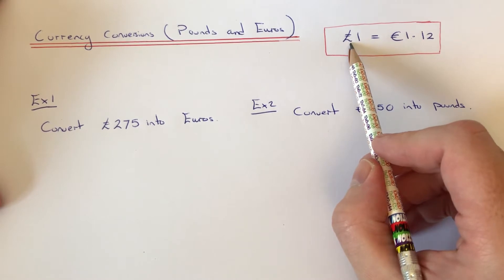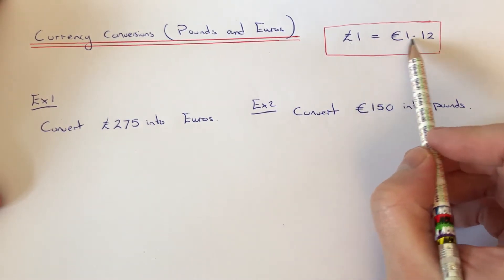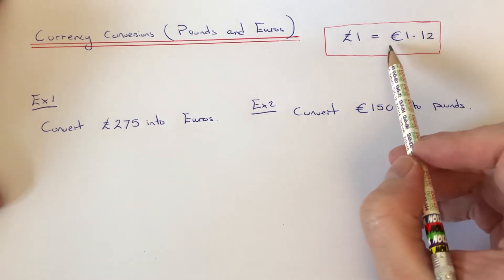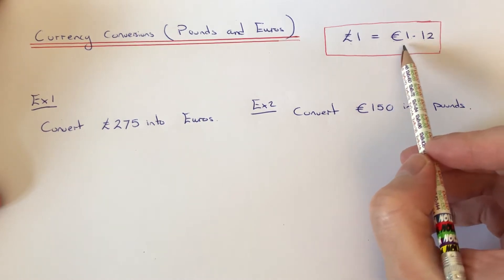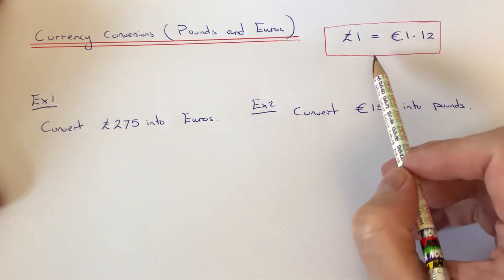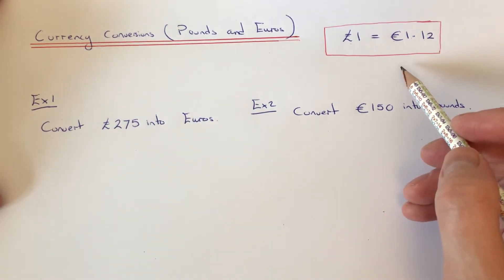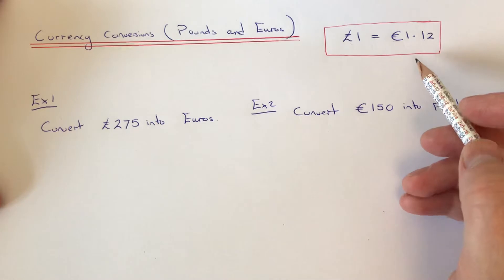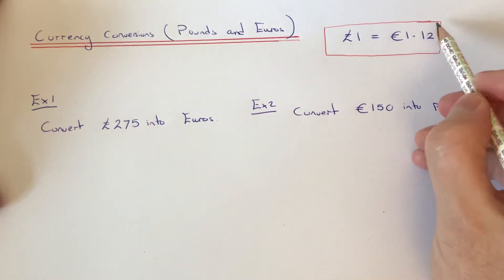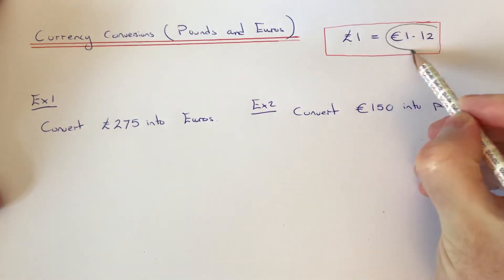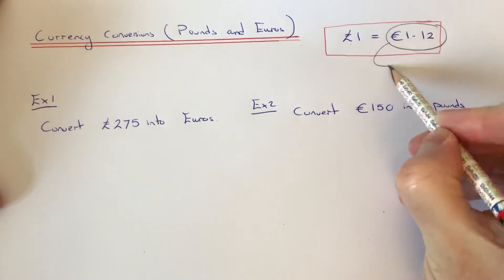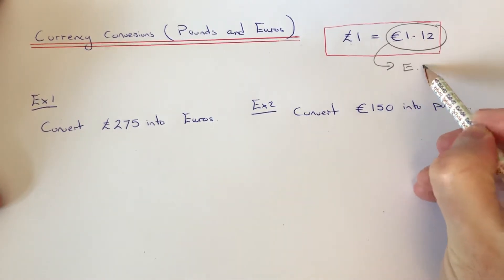The exchange rate today is £1 = €1.12. This exchange rate is usually stated on your exam question. If you don't have the exchange rate, just type the exchange rate into Google and it should come up. This number here is the number that we're going to multiply and divide by, so this is the exchange rate number.